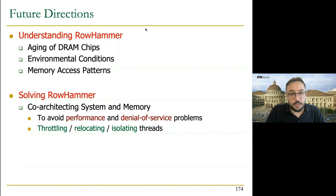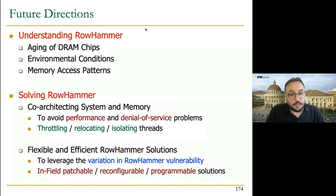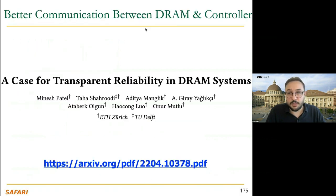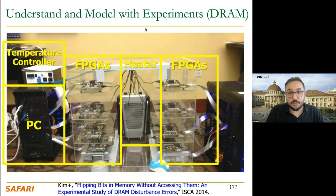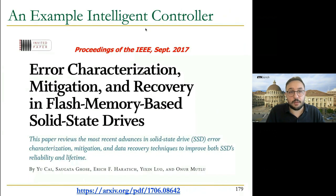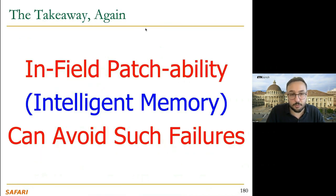For solving RowHammer, we propose two directions: one is co-architecting system and memory to avoid performance and denial-of-service problems that current RowHammer mitigation mechanisms can cause — achieved by throttling and relocating aggressor rows. Another direction is flexible and efficient RowHammer solutions that leverage variation in RowHammer vulnerability, enabled by in-field patchable, reconfigurable, and programmable solutions. For all of these, we need better communication between DRAM chips and the controller, and better coordination of DRAM and controllers. We need more experiments and need to build on our infrastructures, just as we did for flash devices, and we need similar intelligent controllers for DRAM chips in the future.